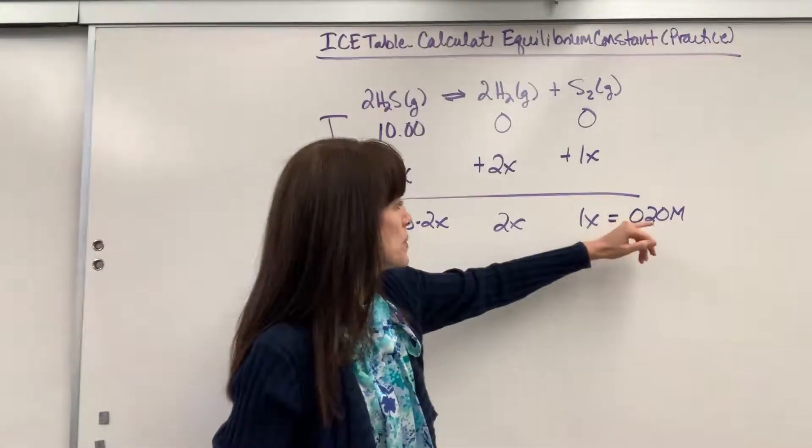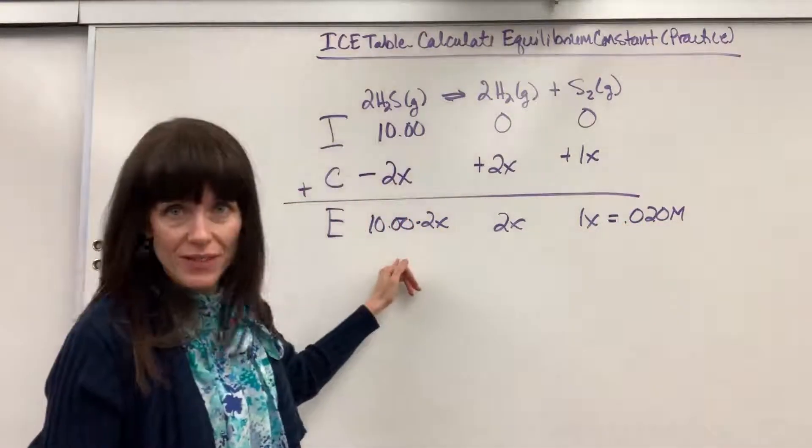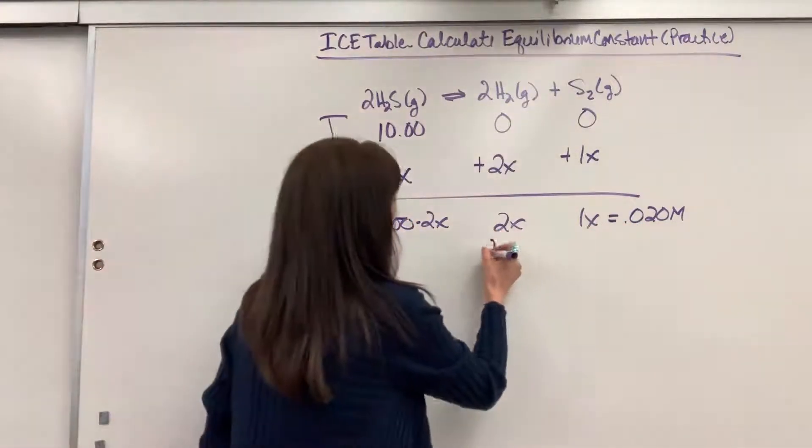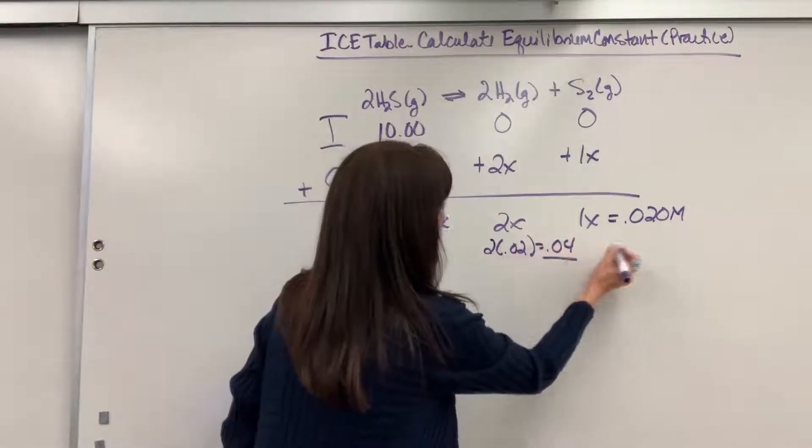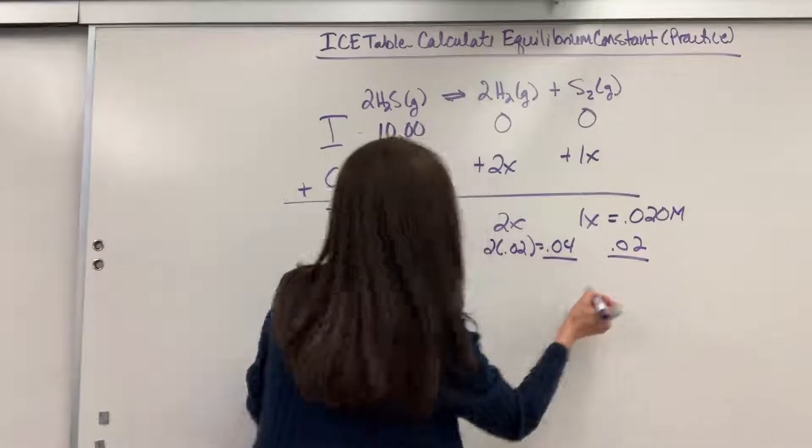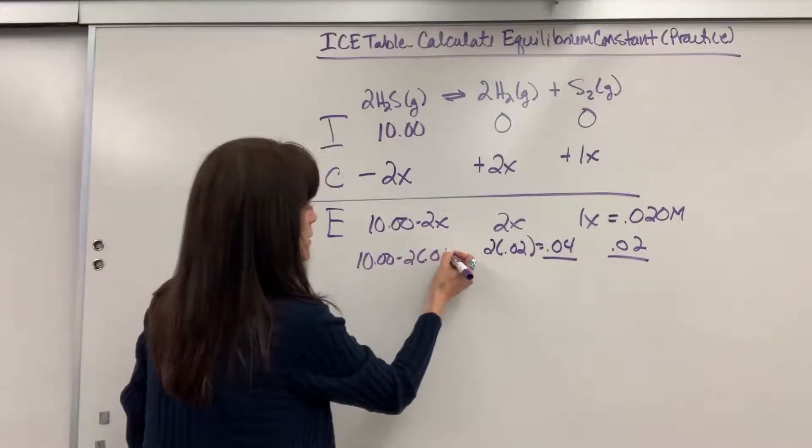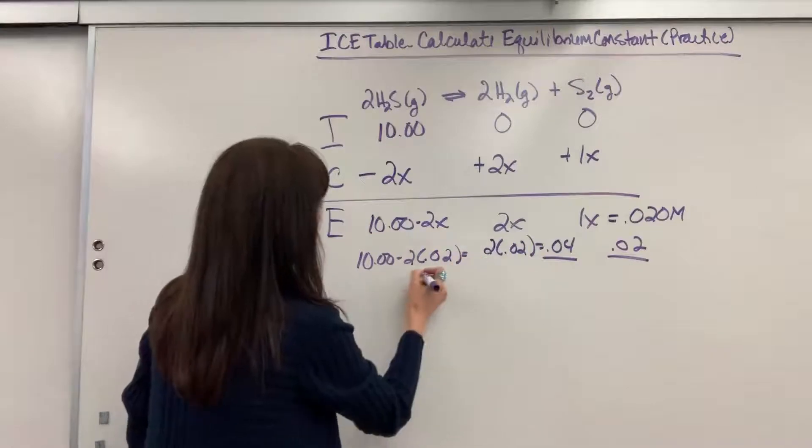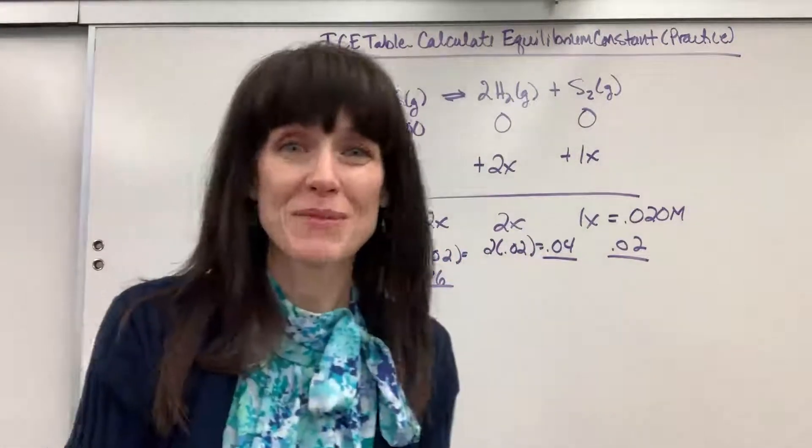So let's go ahead and substitute x for everything so we can get our numbers. We're going to have 2 times 0.02, which will give us 0.04. This is 0.02, and then over here 10 minus 2 times 0.02 is going to give us 9.96.